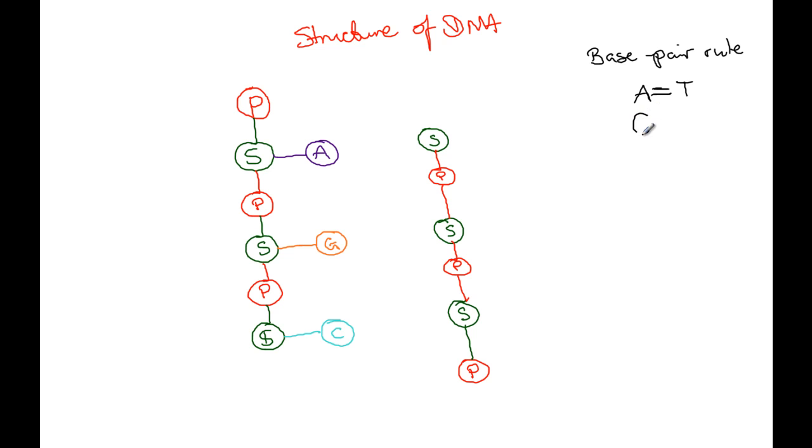As opposed to guanine, which bonds with a triple bond to cytosine. And this is the base pair rule. This is always the way. This is how strands of DNA, opposite strands of DNA, complement each other and bind to each other.